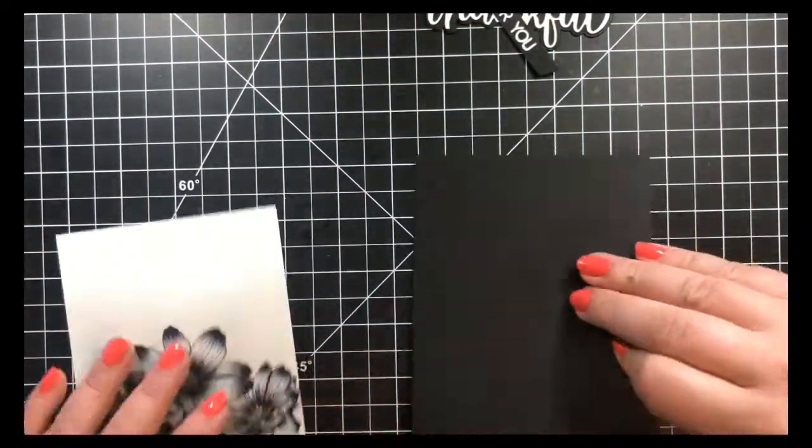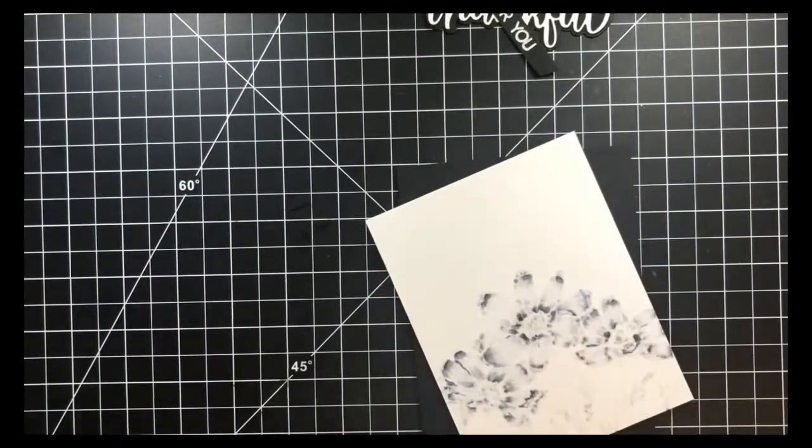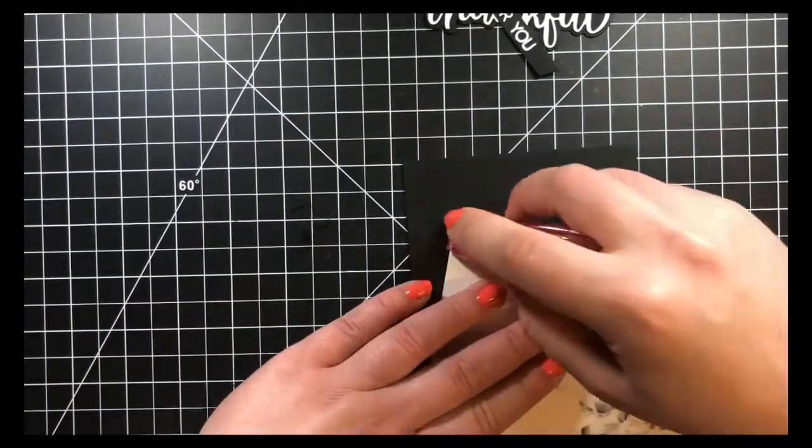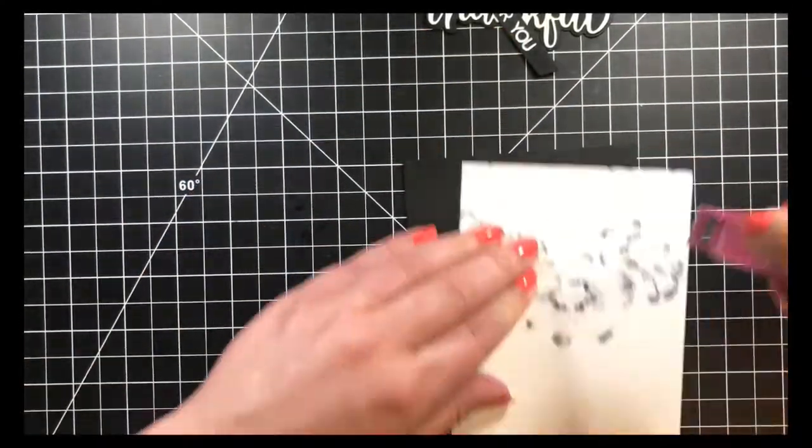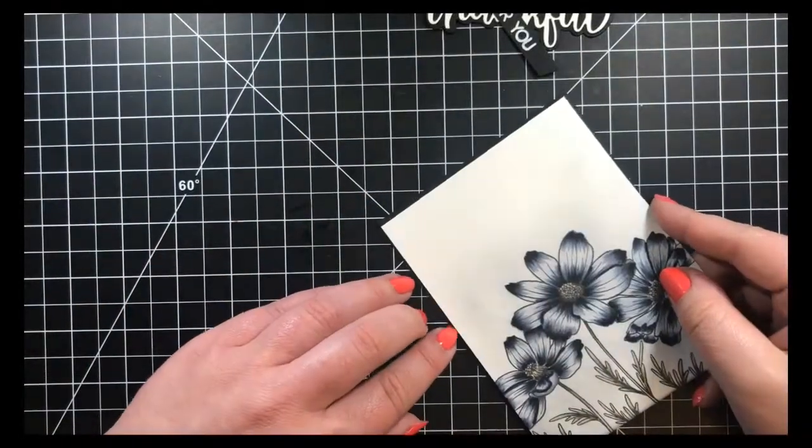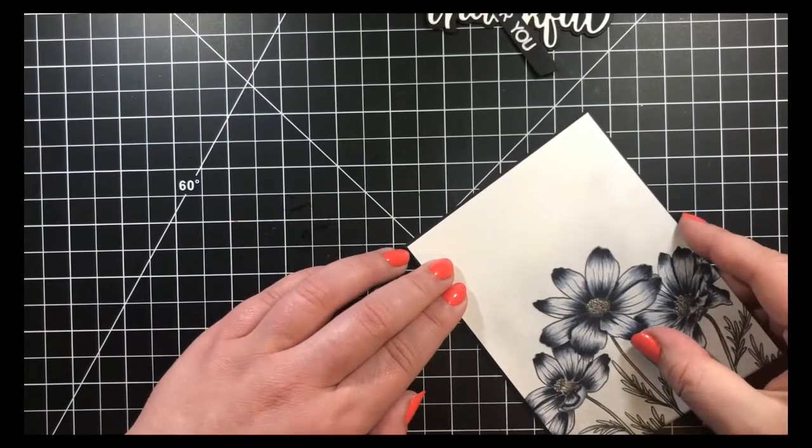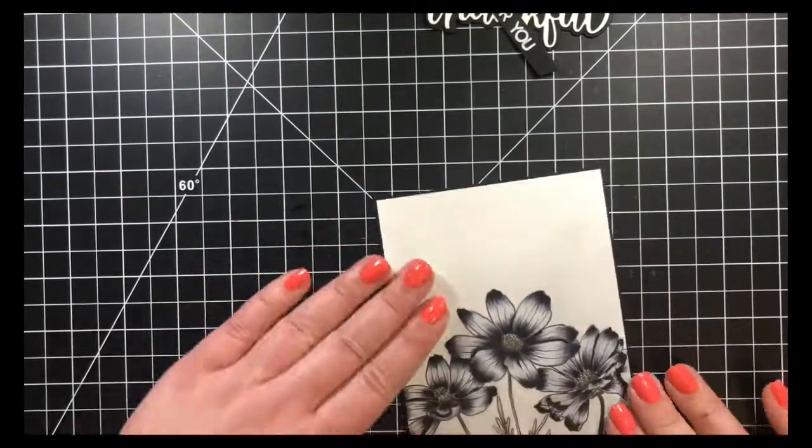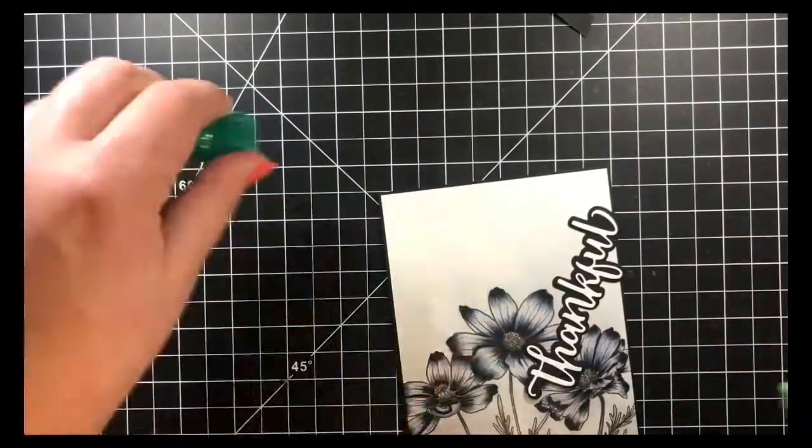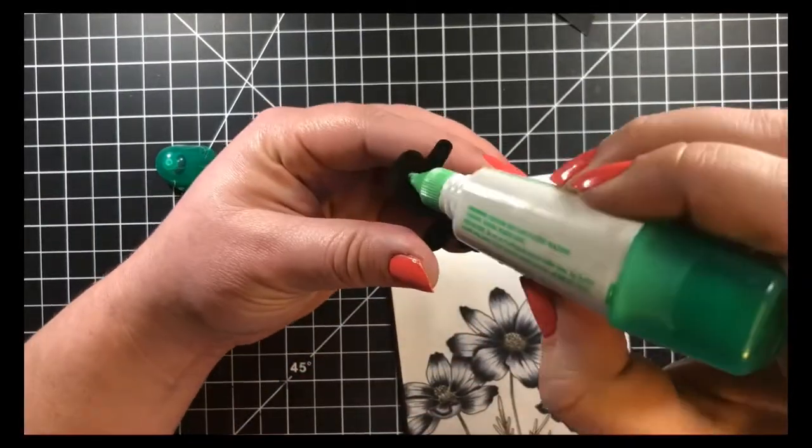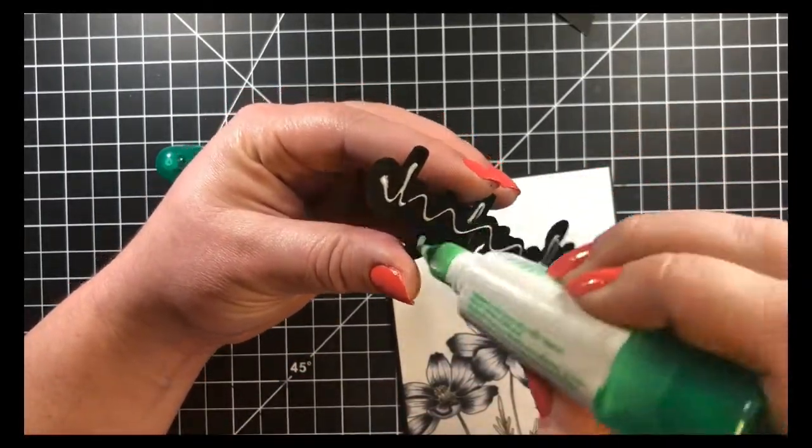I have cat hair all over the place—he kept jumping on my desk as usual. I'm just using my tape runner to adhere that to the card panel, just leaving a small border on all the edges. I use my Tombow Mono Multi glue to adhere the thankful word.